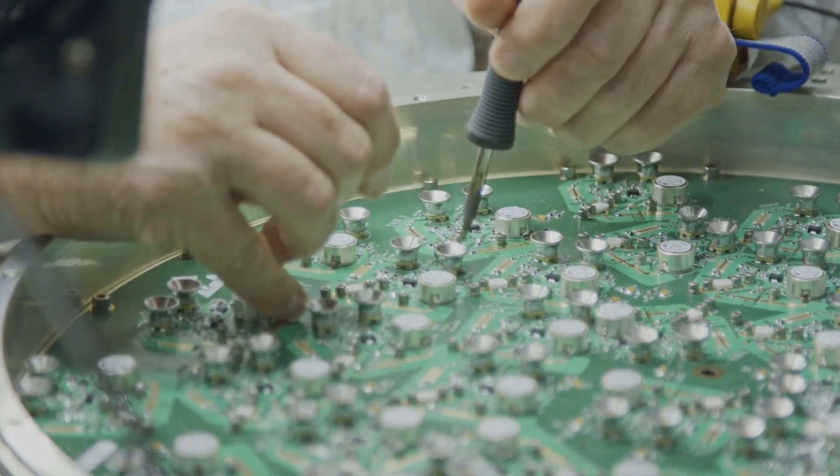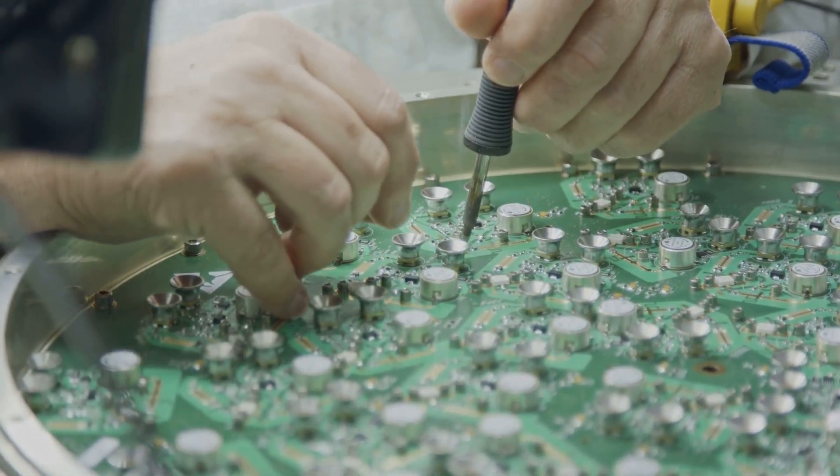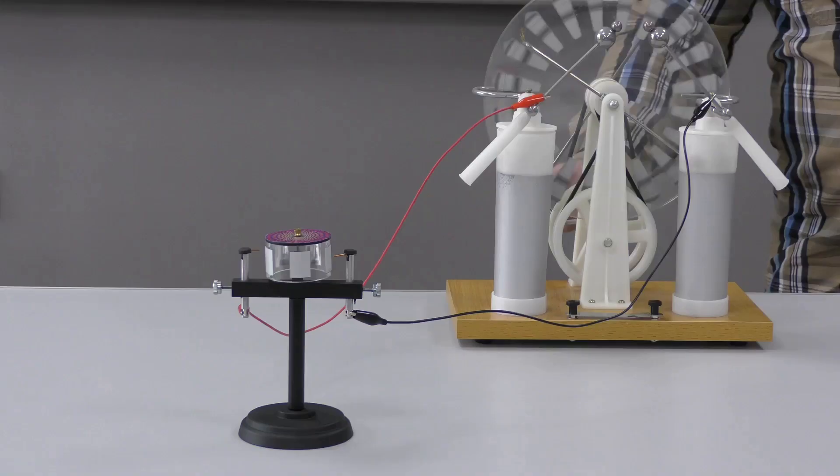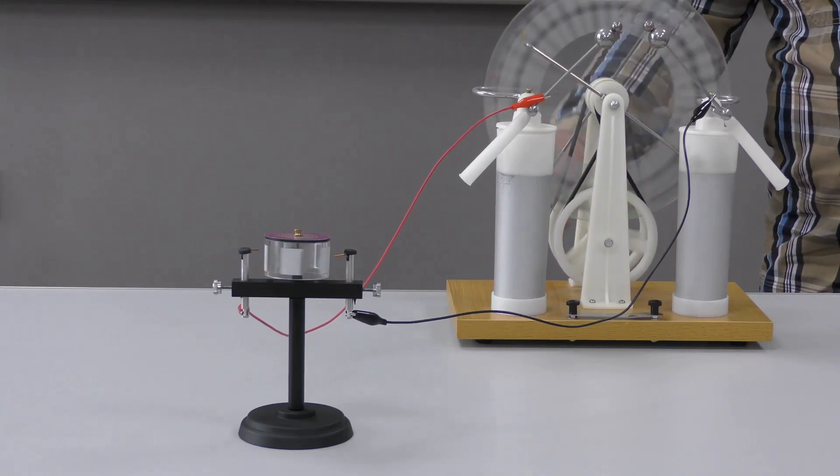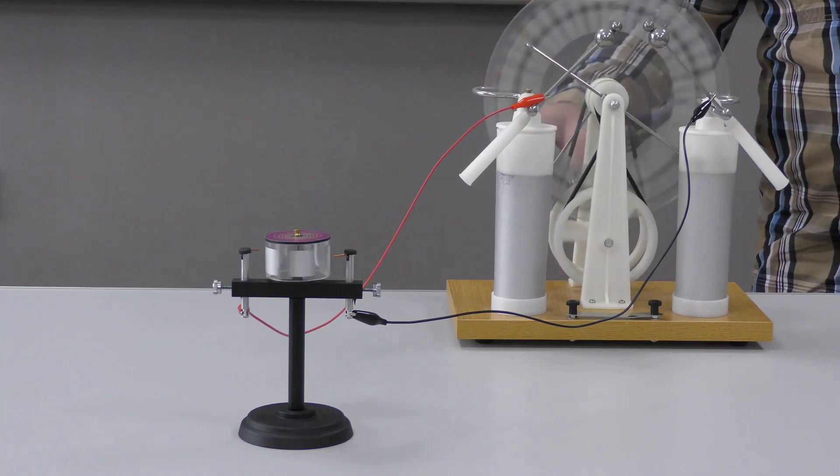This hands-on project will help you understand the fundamental principles of electromagnetism and mechanics. Imagine a loop of wire sitting between the poles of a horseshoe magnet. This setup is the heart of our motor.